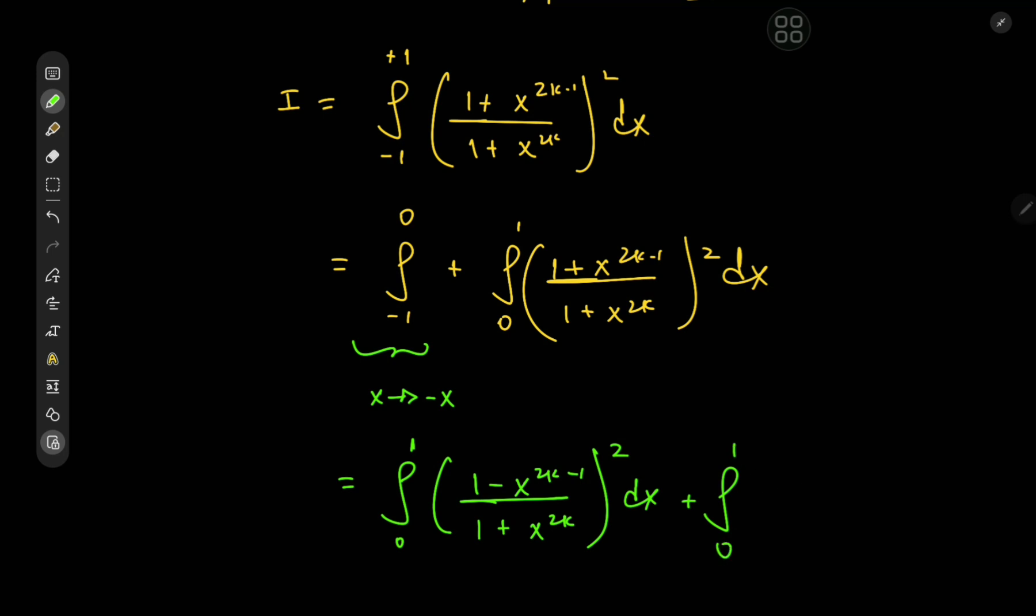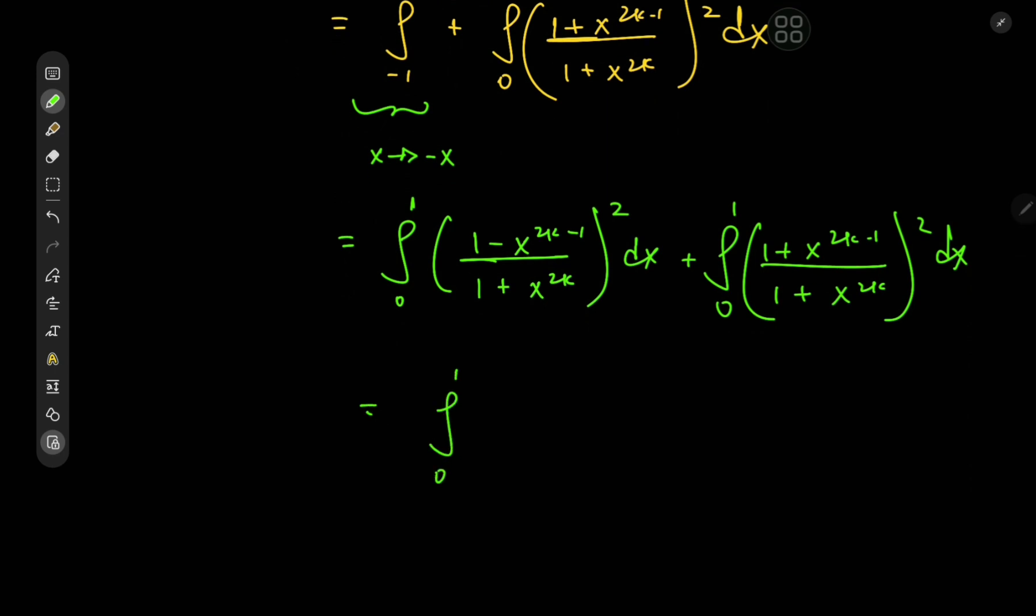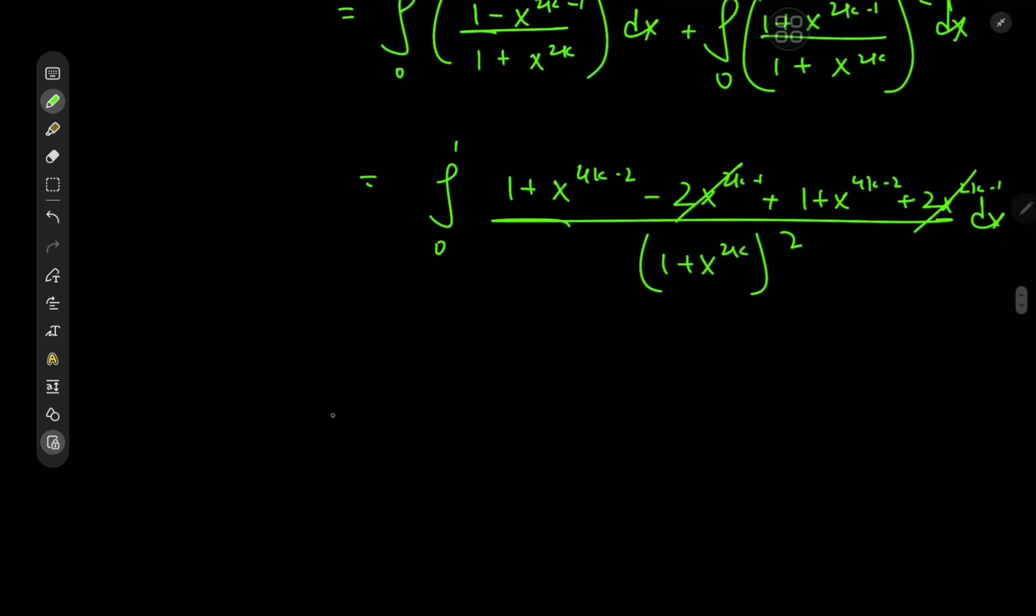Okay cool, and we still have this integral from 0 to 1. We have some interesting looking terms in the numerators. So we could expand the square for the numerators and add them up using the linearity of the integration operator. We have 1 + x^(4k-2) - 2x^(2k-1) + 1 + x^(4k-2) + 2x^(2k-1), where there's some nice cancellation taking place. The denominator is of course the common denominator of (1 + x^(2k))^2.